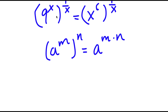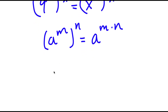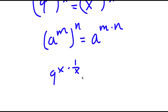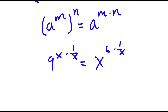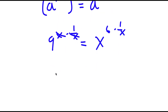So 9 to the power of x to the power of 1 over x equals 9 to the power of x times 1 over x. And x to the power of 6 to the power of 1 over x equals x to the power of 6 times 1 over x. Now x times 1 over x cancel out, so I'm left with 9 is equal to 6 over x.